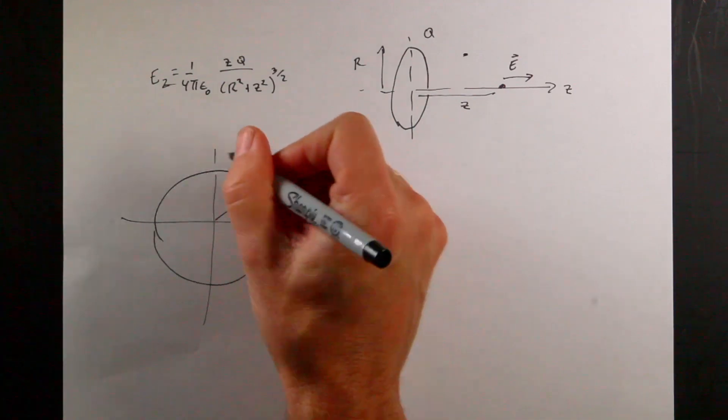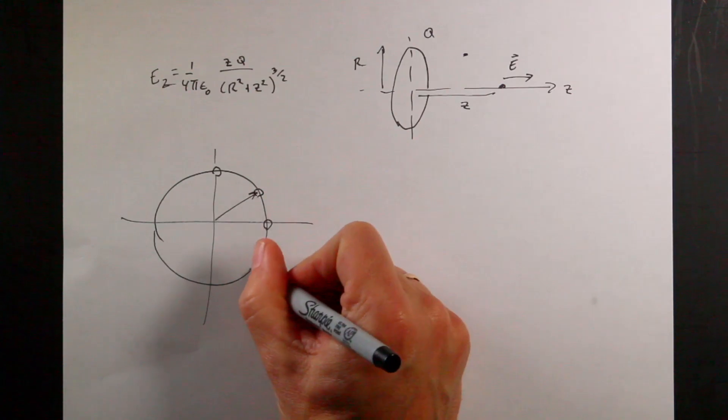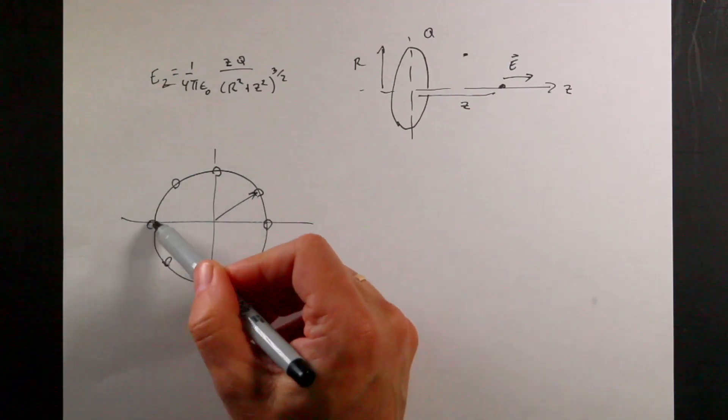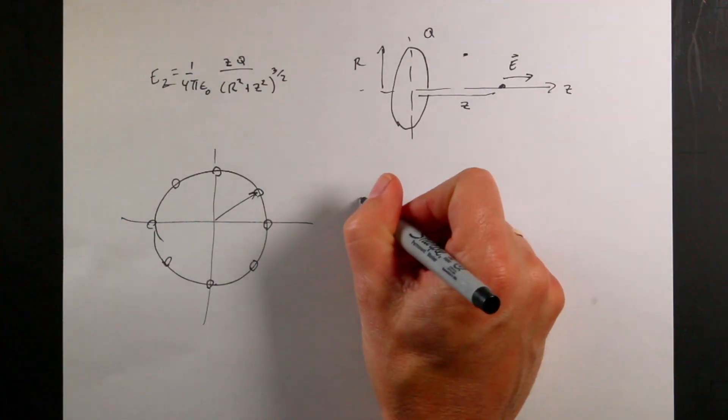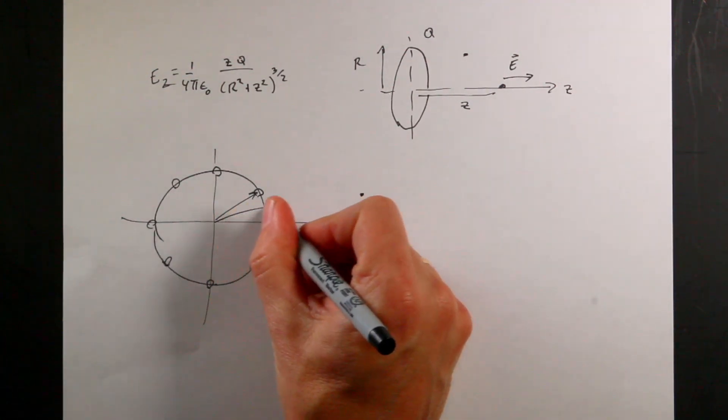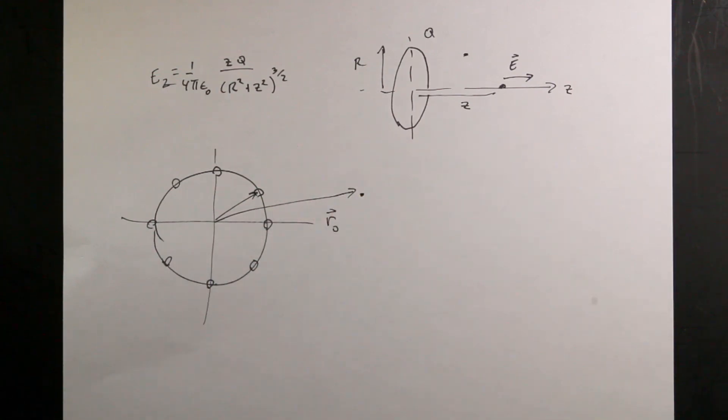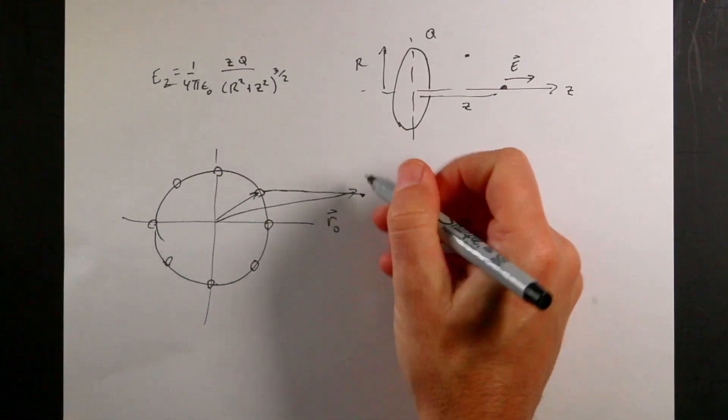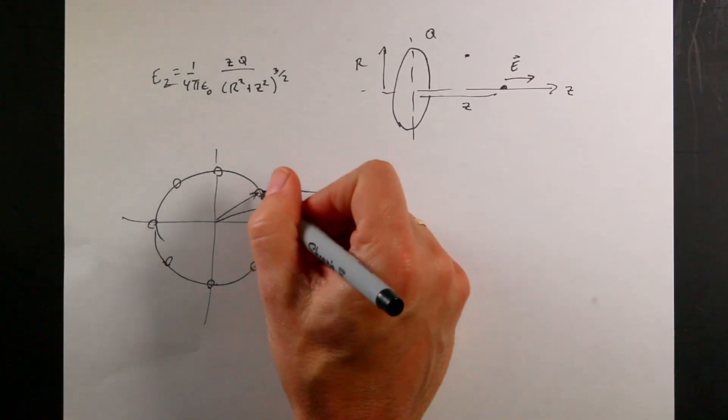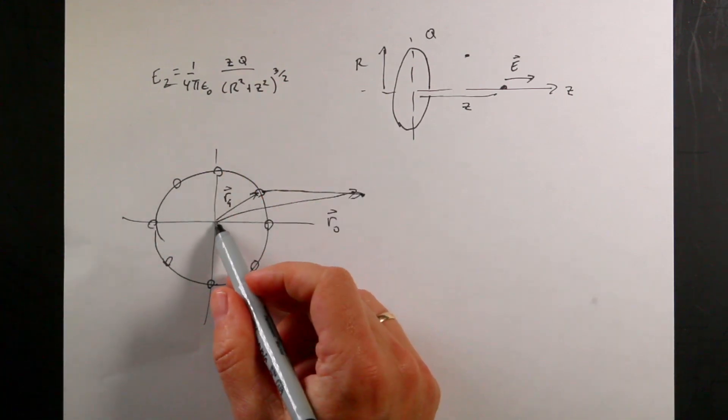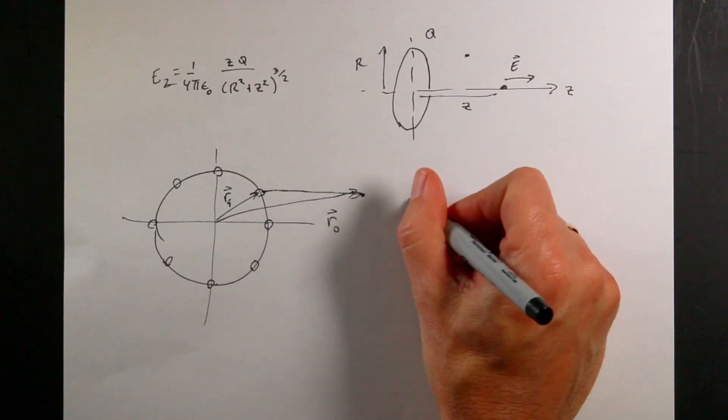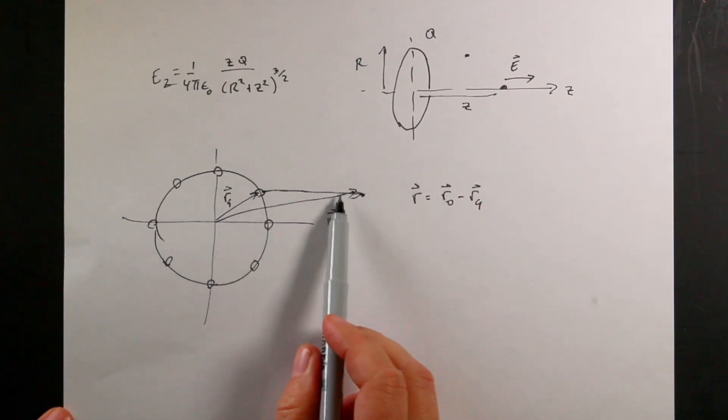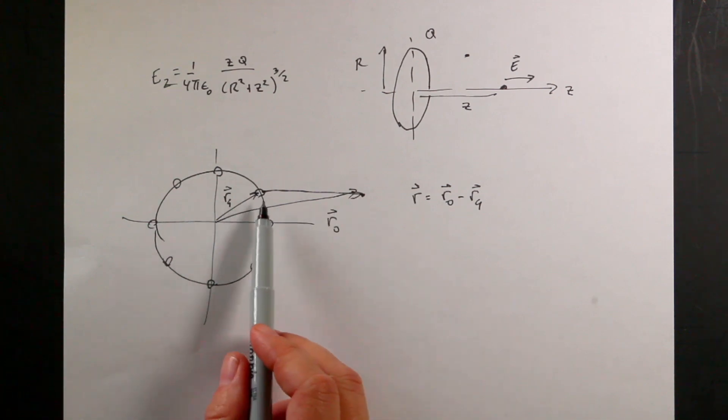Imagine I look at my ring of radius r and break it into eight pieces. Then to find the electric field at observation location r_o, I need to find the vector r from each charge to the observation location. Let's call the charge location r_q, such that r = r_o - r_q. The vector from here to there is the observation location minus the charge location.